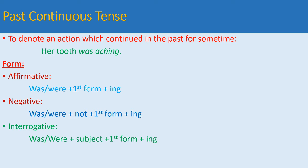The next sub-part of past tense is past continuous tense. It is used to denote an action which continued in the past for some time. For example, 'Her tooth was aching.' 'It was getting darker.' In the affirmative form, we use 'was' for singular or 'were' for plural nouns, plus the first form of the verb with '-ing'. To make it negative, we use 'was/were not' plus the first form with '-ing'. And to make it interrogative, 'was' or 'were' comes before the subject of the sentence.